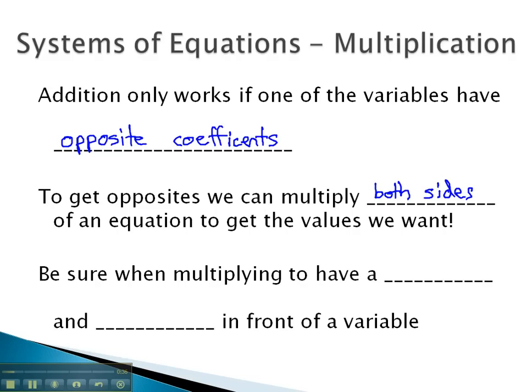As we multiply, be sure our final result will have a positive and a negative in front of one of the variables, so they subtract out to zero.